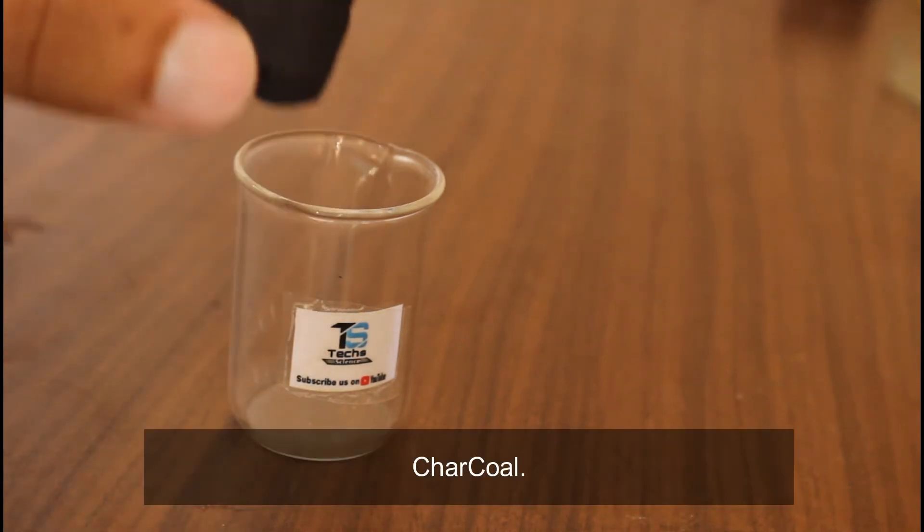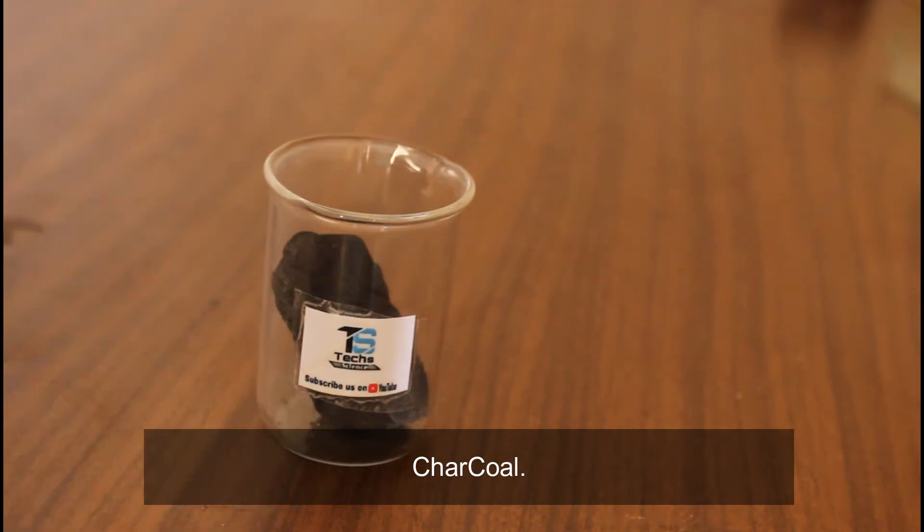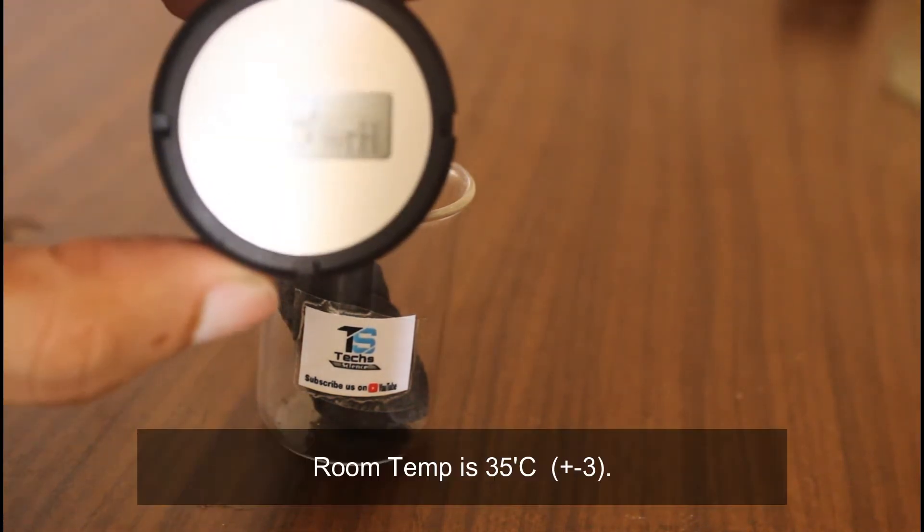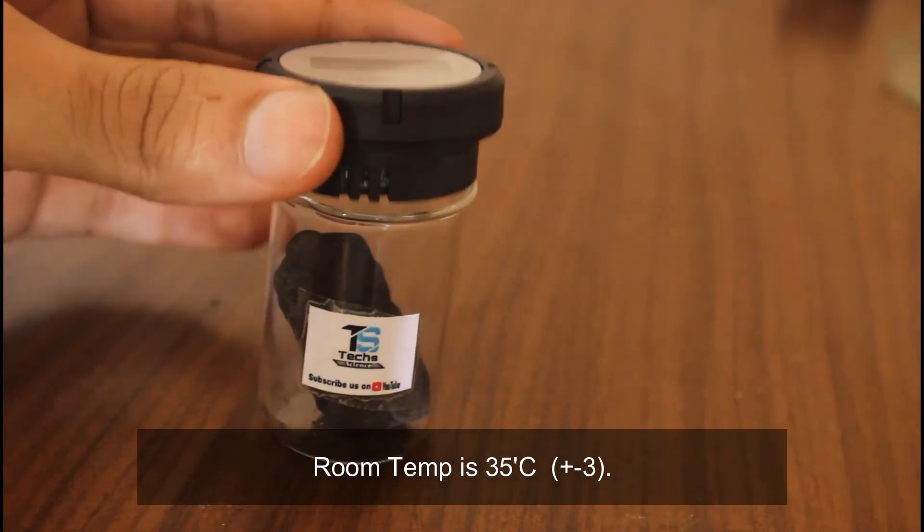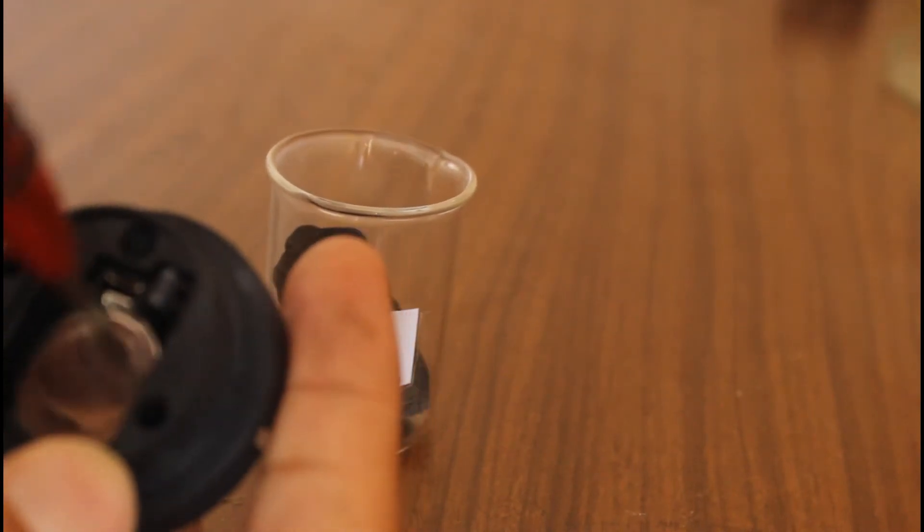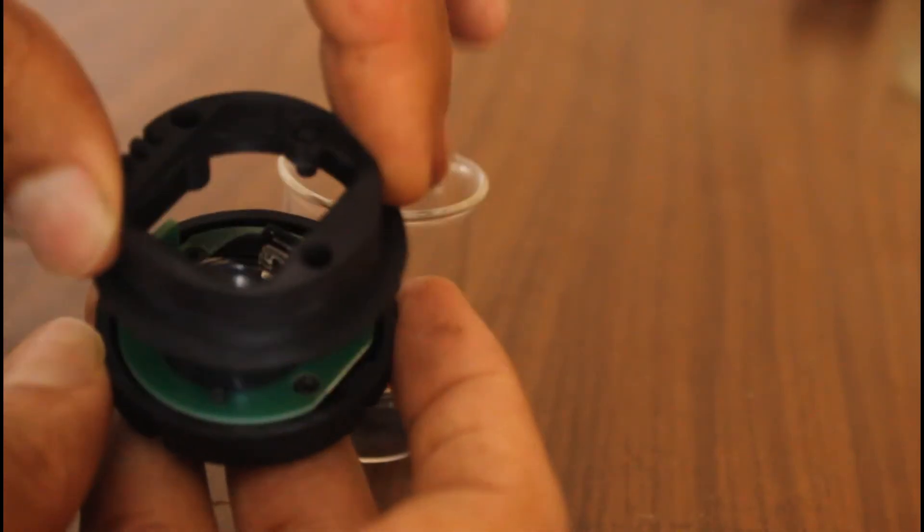First, I will put charcoal in this beaker and then I will put this humidity sensor. It doesn't fit, so I will remove the cover.